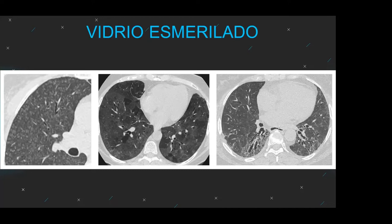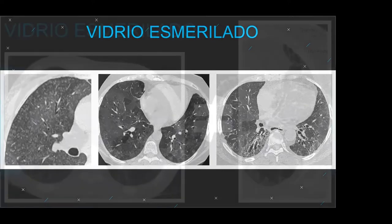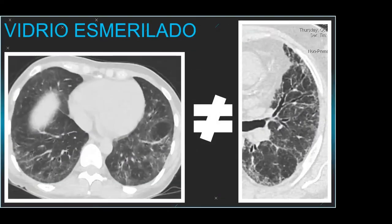El vidrio esmerilado no siempre es igual. La tomografía de la izquierda muestra actividad y celularidad — probablemente este paciente mejore con corticoides o algún biológico. La de la derecha ya tiene fibrosis: vidrio esmerilado en contexto de bronquiectasias por tracción y reticulación, signos de fibrosis. Es fundamental que el radiólogo informe si el vidrio esmerilado se sospecha por fibrosis o por actividad.